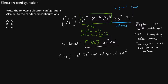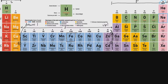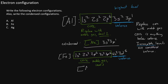Our valence electrons are the highest level, which is 4S2, but also include 3D6 because the 3D6 subshell is incomplete. Remember, incomplete levels are still considered valence. So 4S2 and 3D6 are valence, and the remaining electrons are core. To write the condensed configuration, we find the noble gas on level 3, which is argon. So we write argon in brackets, then 4S2, 3D6.